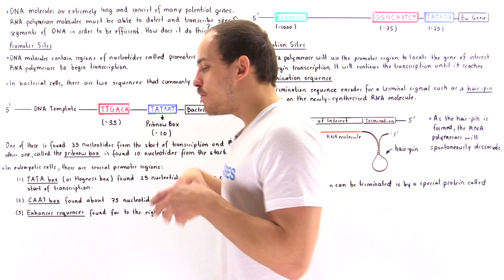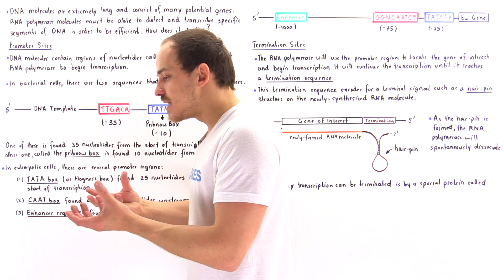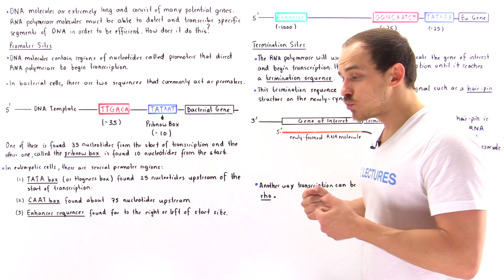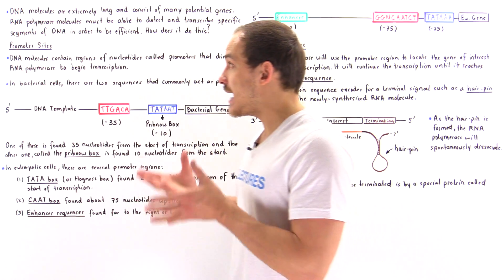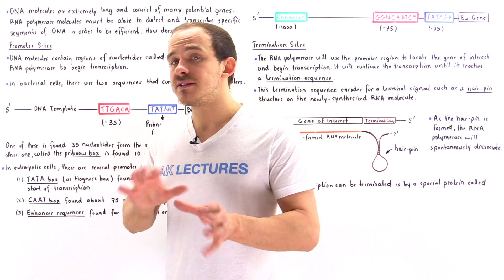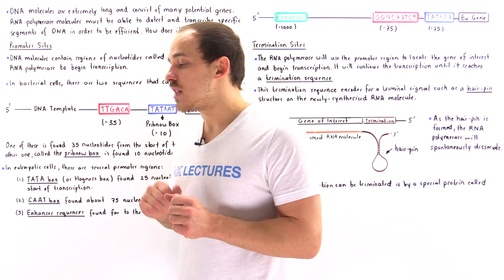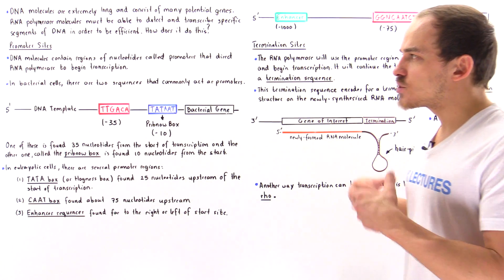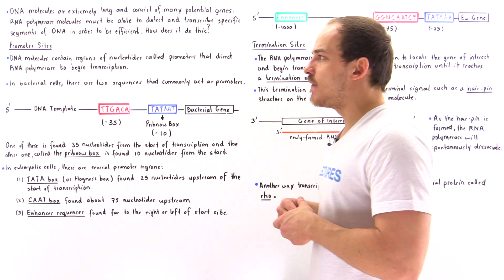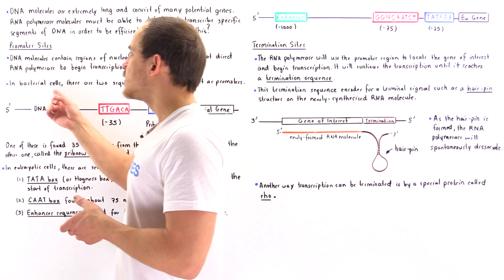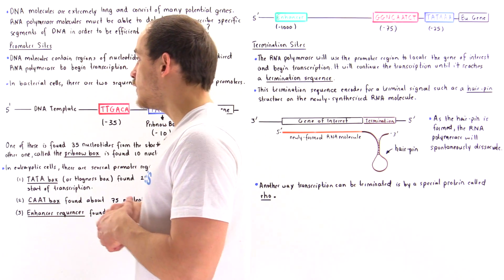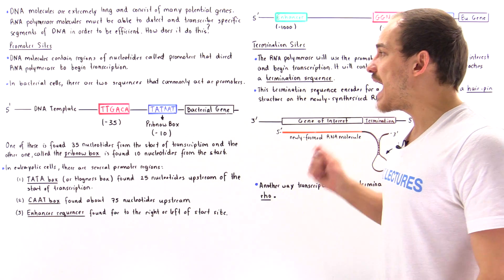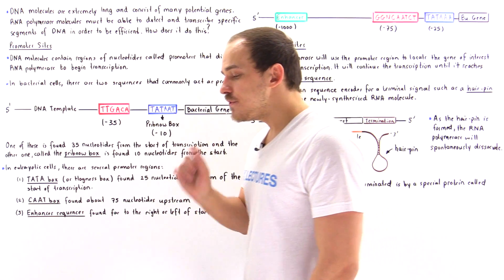Even though both bacterial cells (prokaryotic) and human cells (eukaryotic) contain these promoter sites, they are slightly different. Let's begin by discussing the promoter sites found in a prokaryotic cell such as a bacterial cell. We have two sequences that act as promoters.